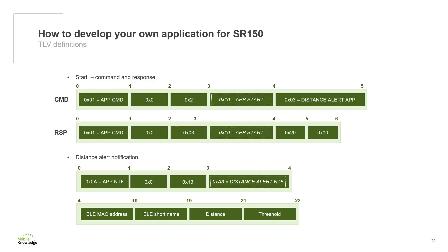Once the anchor starts ranging with one or more tags, we will start receiving Distance Alert notifications. These notifications are identified by the app notification type, 0x0A in hexadecimal. The value field will contain 19 bytes: the first corresponds to the subtype that identifies the notification as Distance Alert, followed by 6 bytes of the Bluetooth Low Energy MAC address, then 9 bytes of the Bluetooth short name, 2 bytes for the distance value, and finally 1 byte indicating the threshold at which the tag is located.